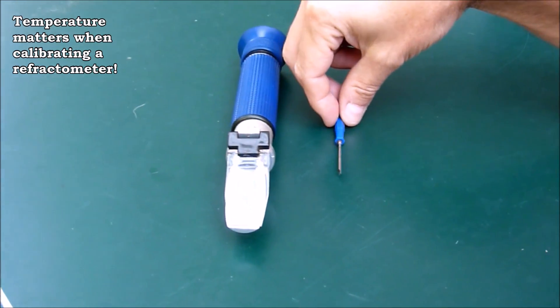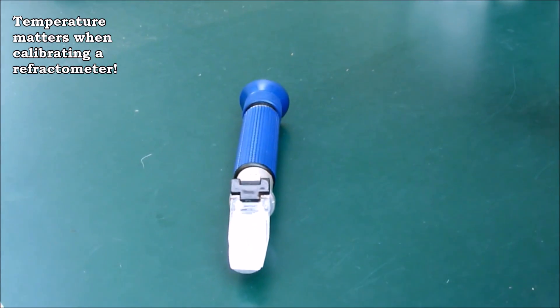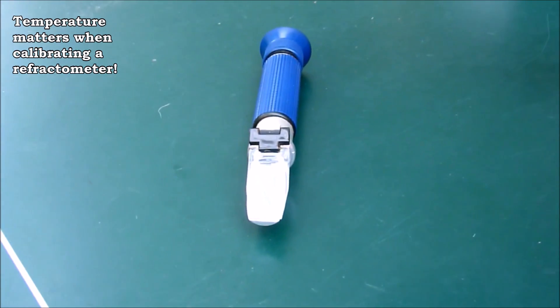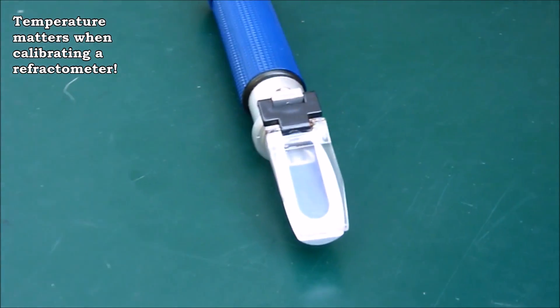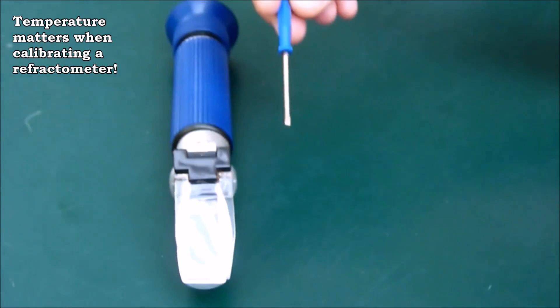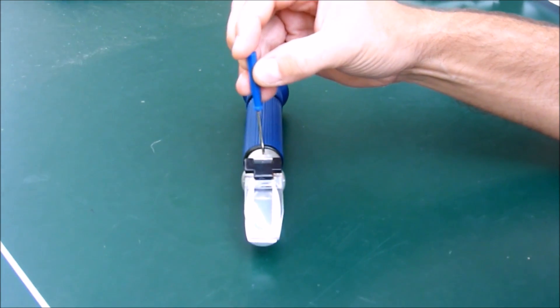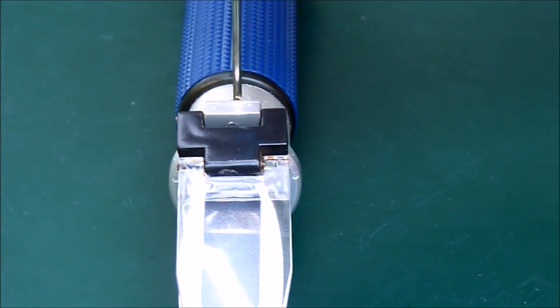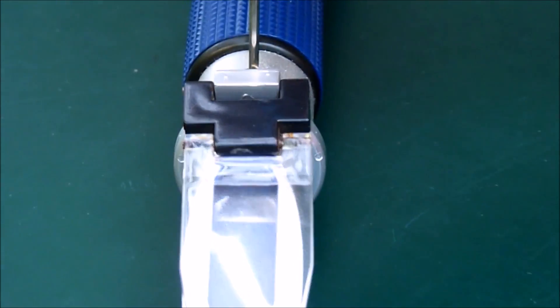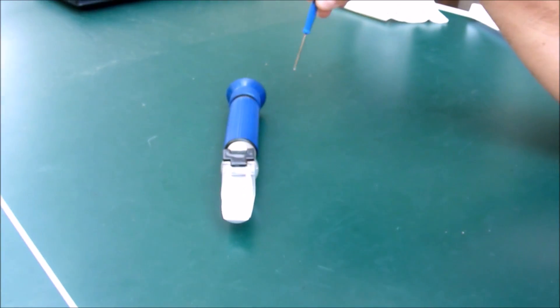So, the pros are accuracy. The only con to this tool is you have to calibrate it. And, when you calibrate it, it has to be accurate. Otherwise, every reading from that on will be wrong. So, you generally do that with distilled water. And, they give you a little tool. It's a small screwdriver here. And, you just turn this screw slightly based on the temperature and distilled water which has a reading of 1. And, you set it, you set that as your reference. And, from then on, you're good to go. You calibrate it periodically. Just make sure it's accurate.